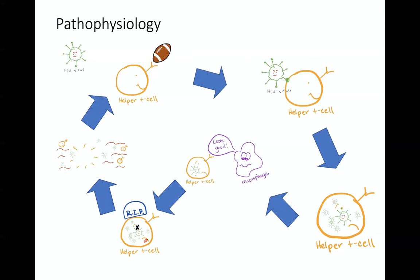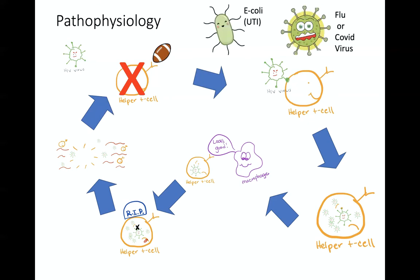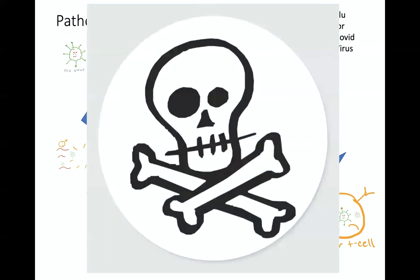HIV does this so much and causes so many of our helper T cells to self-destruct that we don't have quarterbacks calling the shots for our immune system. Normal infections like E. coli bacteria from a UTI, or some kind of viral infection — foreign invaders — can come by. But because we don't have the quarterbacks calling the shots, the patient can't survive the attack from simple foreign invaders like UTIs, pneumonia, the common cold or flu.